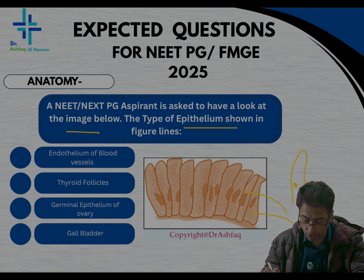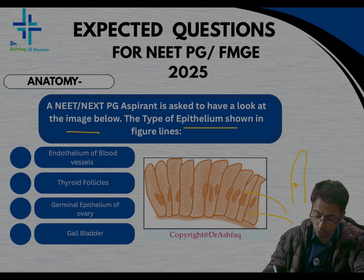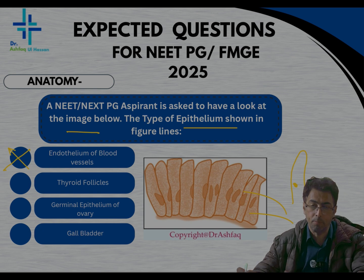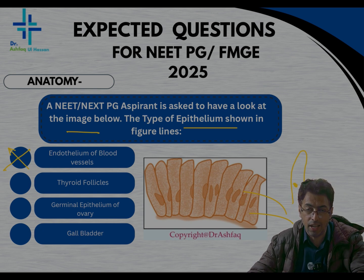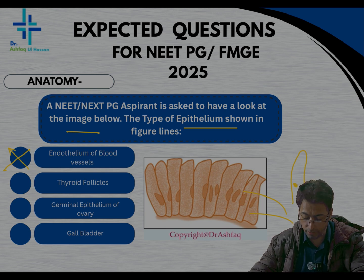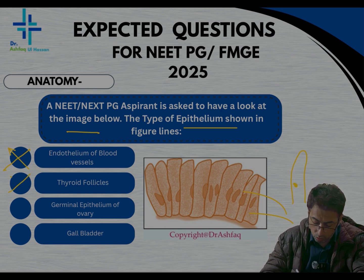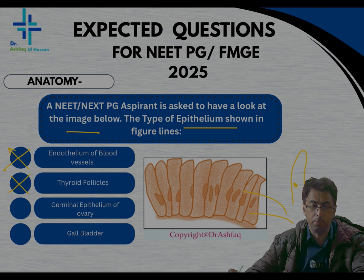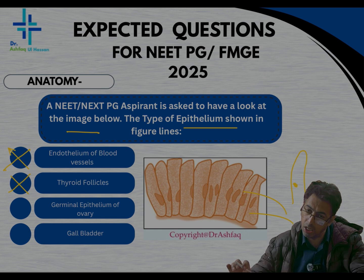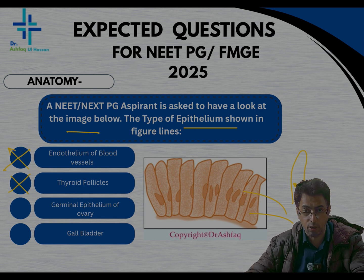Scanning through the options: the endothelium of blood vessels is not the answer because it is lined by squamous epithelium — a very important classic point. The thyroid follicles are characterized by the presence of cuboidal epithelium. So cuboidal epithelium is the important feature of both the germinal epithelium of the ovary and the thyroid follicles — neither is a correct option.